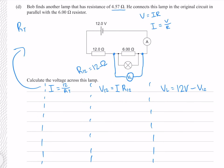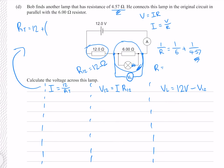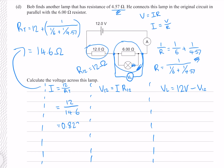Our total resistance can be found by considering we have two components in series, so they add together: 12 ohms adds with this component here, which itself is two resistances in parallel. Using the parallel resistor equation, where our 4.57 ohms is the lamp resistance, the parallel combination is 1 over (1/6 + 1/4.57), which gives 14.6 ohms to three significant figures. Putting that in gives 0.822 amps, which we use to get 9.86 volts for V12, and finally 2.14 volts across the lamp.